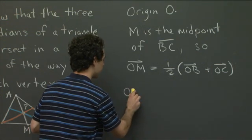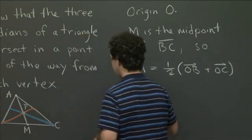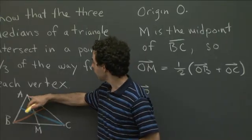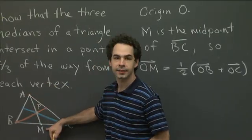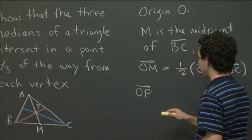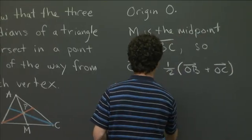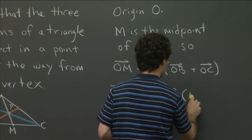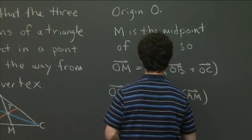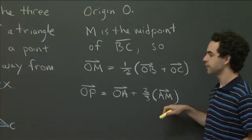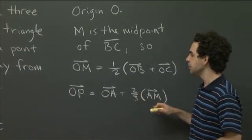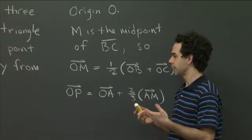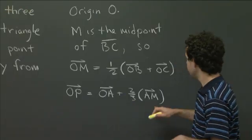That's the position vector of M. Now we have to figure out what the position vector of P is. In order to do this, we can note that in order to get from the origin to point P, what we have to do is we have to go from the origin, wherever it is, to A, and then we have to go from A two-thirds of the way to M. So the vector OP is equal to OA plus 2/3 of the vector AM, because it goes two-thirds of the way from A to M in order to get from A to P. This is because we've chosen P to be the point that divides segment AM into a 2 to 1 ratio, so that AP is 2/3 of AM.